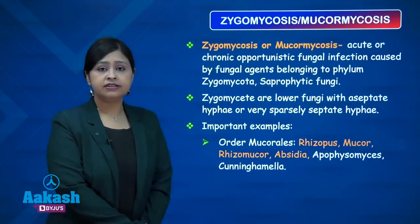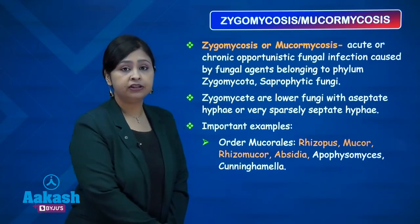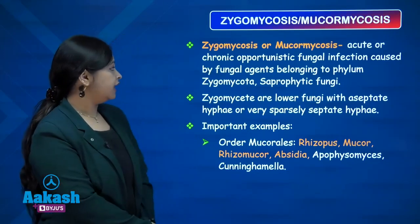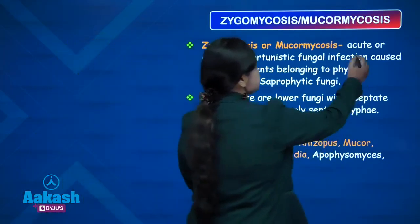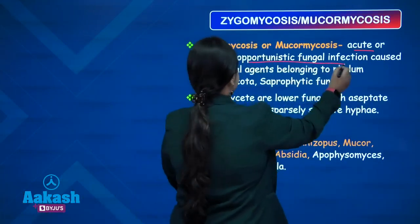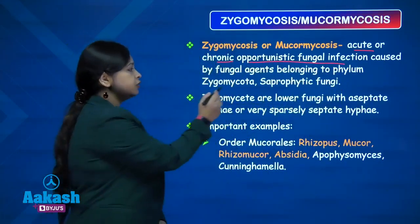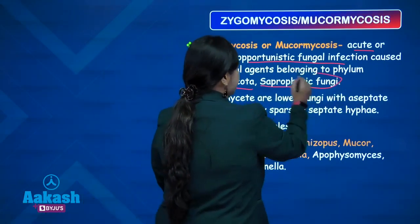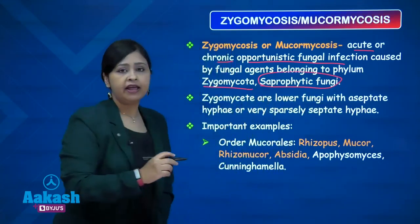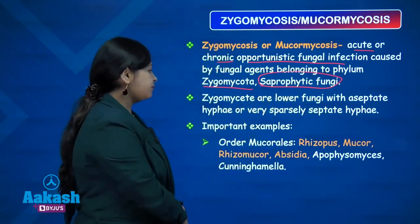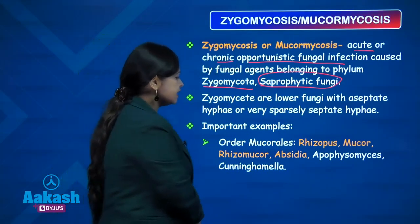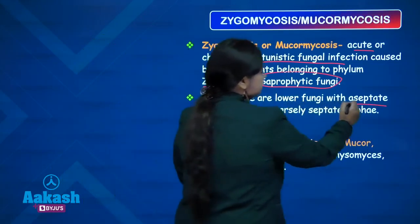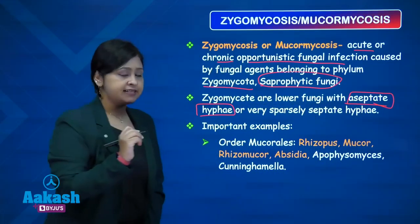Zygomycosis or mucormycosis is an acute or chronic opportunistic fungal infection caused by fungi belonging to the phylum Zygomycota. These are saprophytic fungi not usually causing infections in humans except in immunocompromised status. The zygomycetes are lower fungi with aseptate hyphae or very sparsely septate hyphae — broad aseptate hyphae as already discussed under aspergillosis.